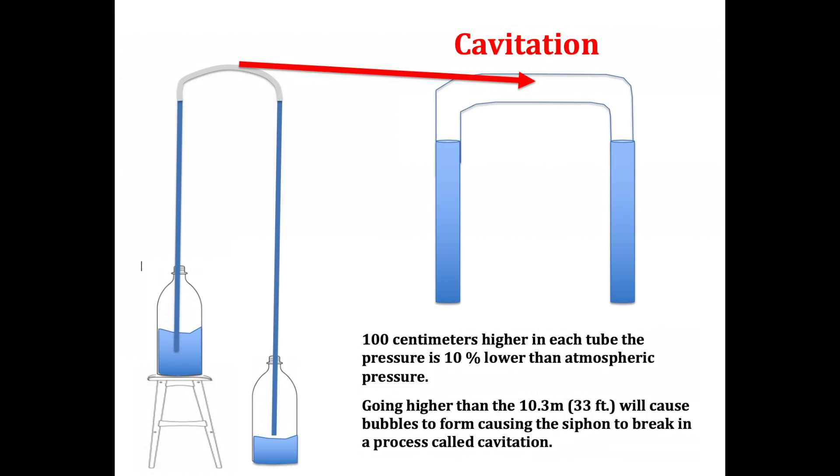For every 100 centimeters in height, the pressure inside reduces by about 10%. Going higher than 10.3 meters will cause cavitation inside the tube. Gas bubbles will start to diffuse out of the liquid as the near vacuum forms at this height. When the gap becomes big enough, the siphon will stop flowing.